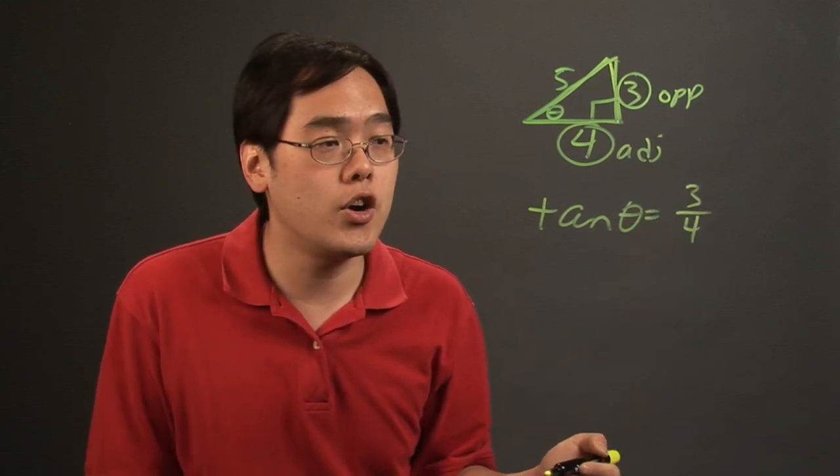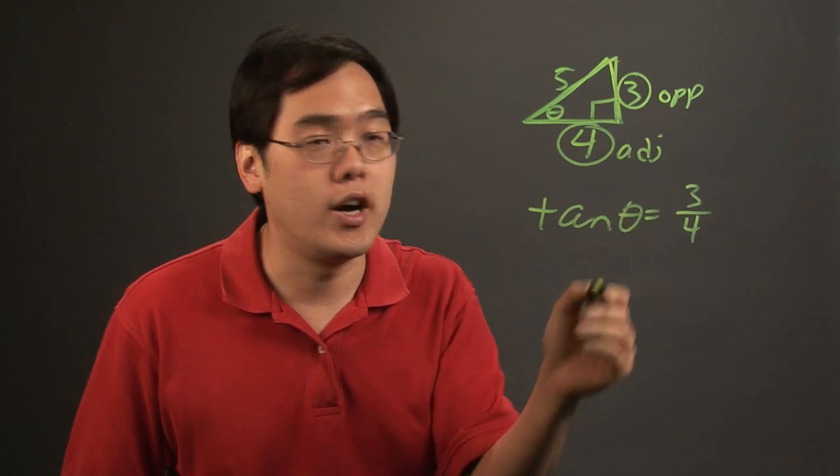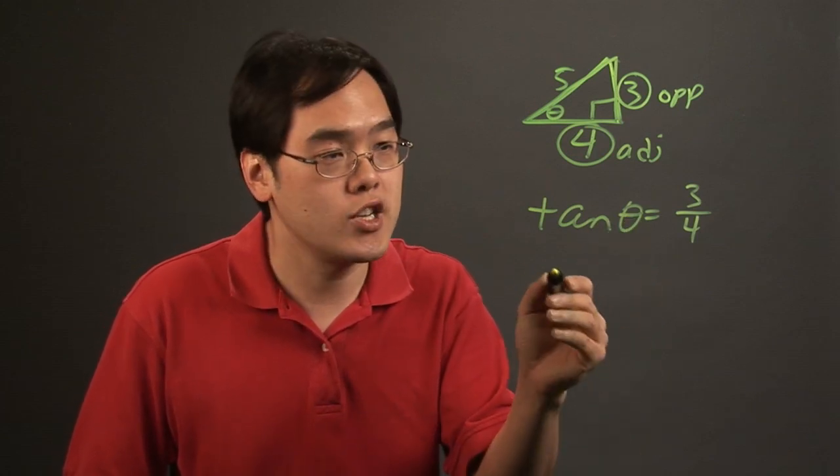Now, to find the angle of elevation, all you need to do is get the angle on its own. That means you have to take the tangent inverse of both sides.